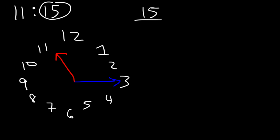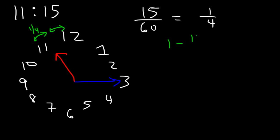So the 15 points to 3. Now where is the hour hand? We know that the hour hand is between 11 and 12, but it's closer to 11. What we need is the fraction. So take 15 — the value of the minutes — and divide it by 60. 15 over 60 reduces to 1 fourth. So therefore, the hour hand is 1 fourth away from the 11th hour, which means 3 fourths is between the hour hand and 12 — it's 1 fourth of the way going from 11 to 12, so it's 25% of the way between 11 and 12.